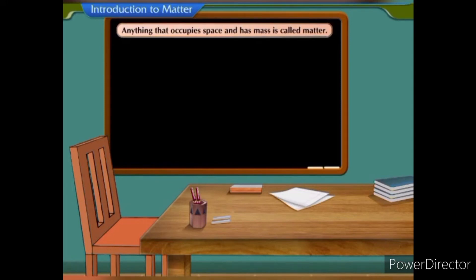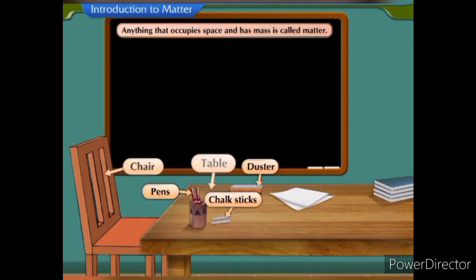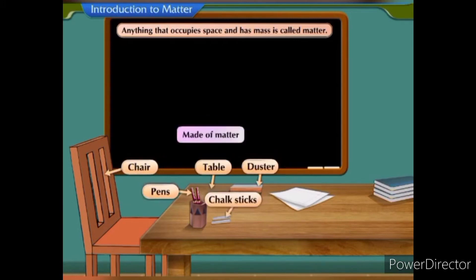All the above examples — tables, chairs, chalk sticks, dusters, pens, etc. — occupy space and have mass. Hence, they are made of matter.